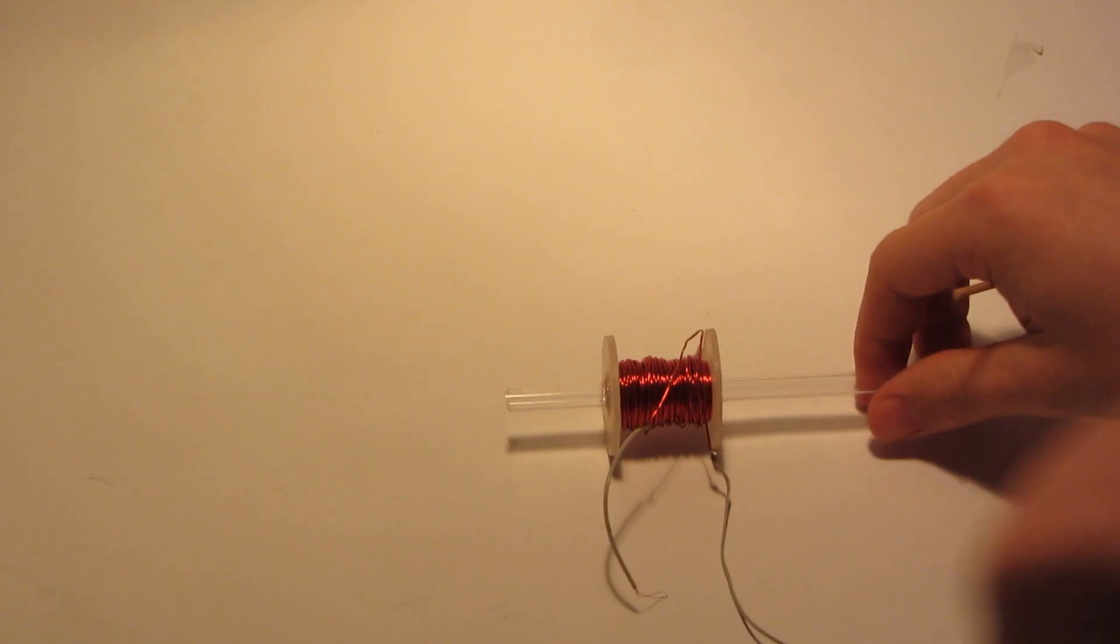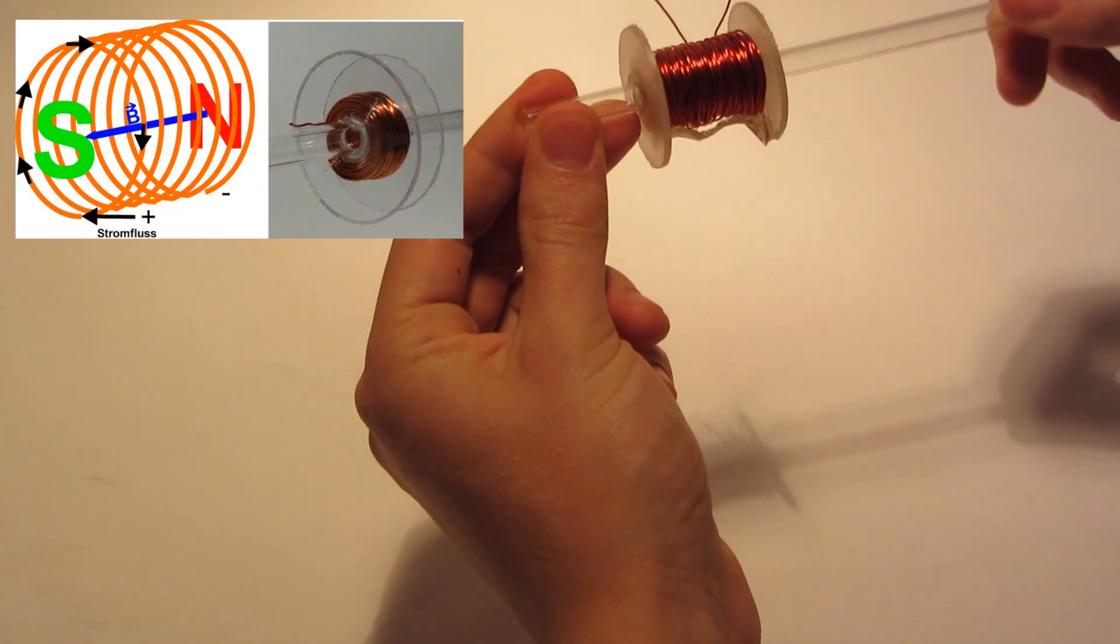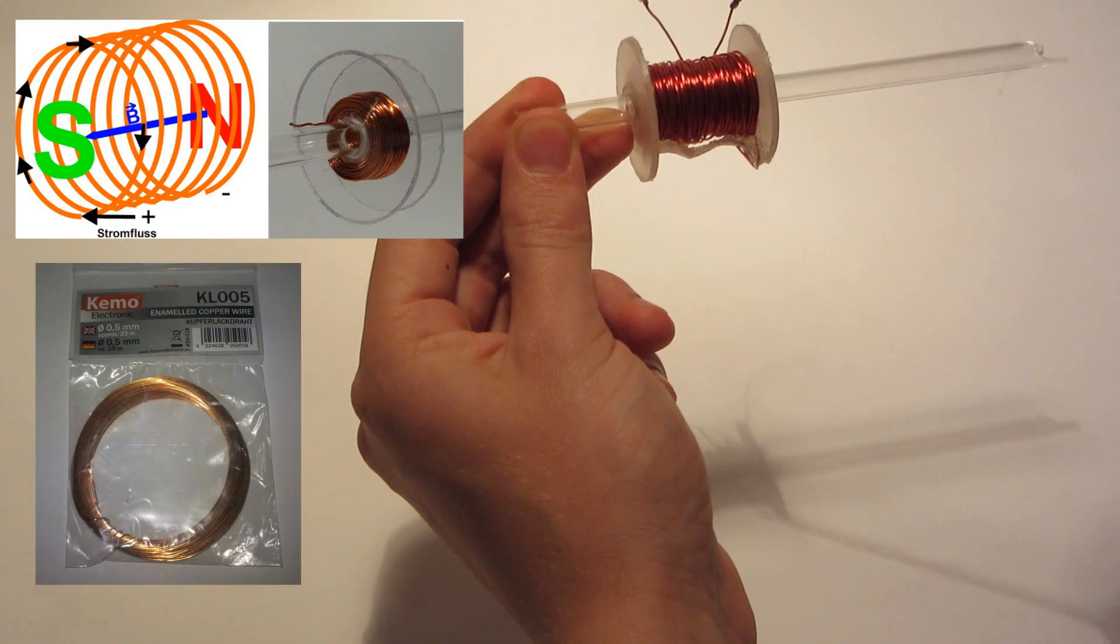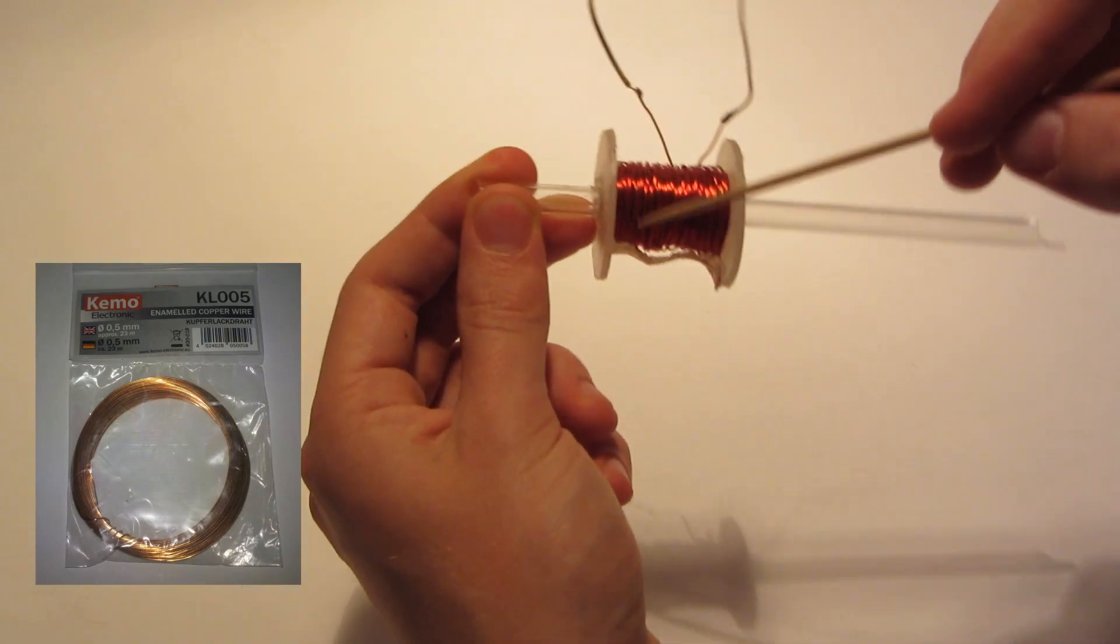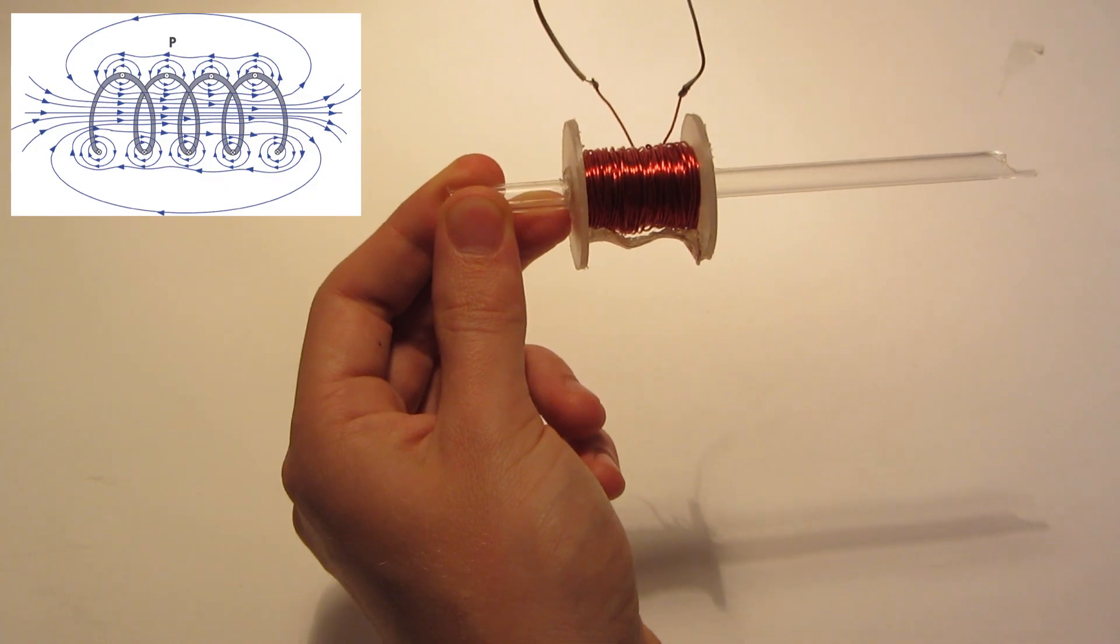Now this is the most important part of the coil gun. It's the coil, of course. So this is coated copper wire. There is no short circuit here, it's coated wire. It creates a magnetic field.